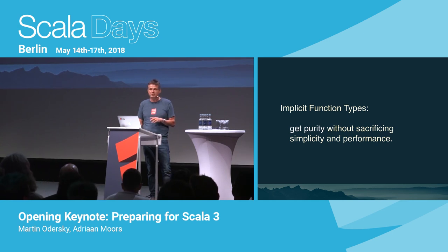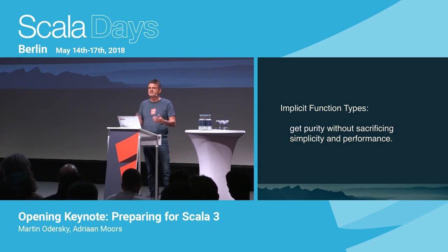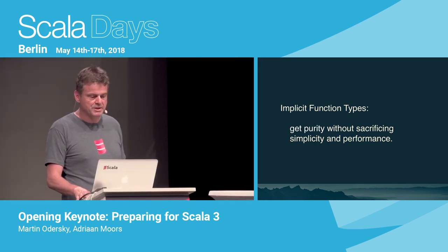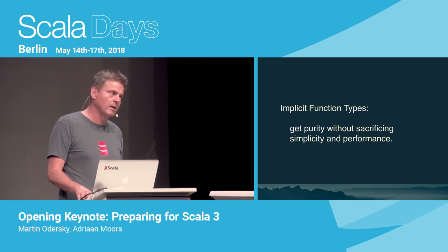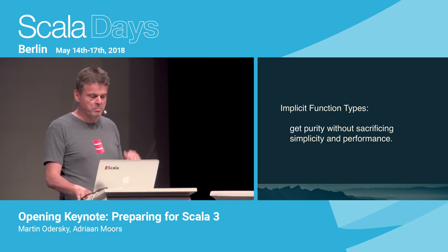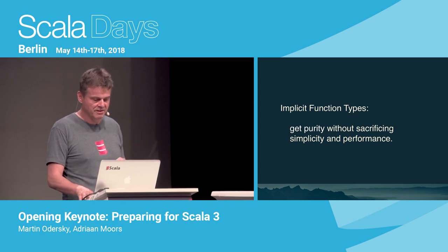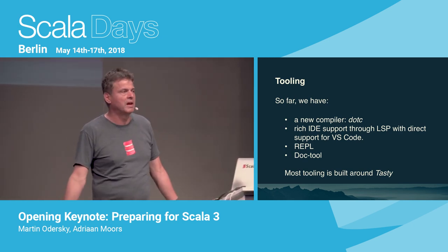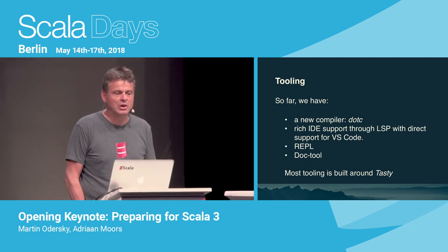We're not the first to discover this. There's a movement gaining steam called algebraic effects, which is basically the same observation: if you have effects, you want a system where they compose naturally. Implicit function types are, I believe, the simplest way possible to express simple algebraic effects. For more complicated algebraic effects, you would need continuations, which is another question. That was a quick rundown of the language — but the language in isolation is useless, so you need tooling.